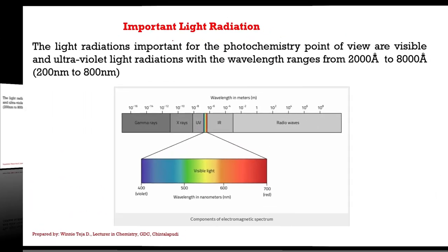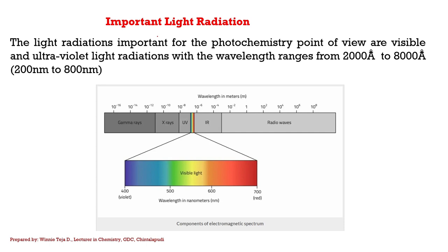The important light radiations for photochemistry are visible and ultraviolet radiations, with wavelength ranges from 2,000 angstroms to 8,000 angstroms.